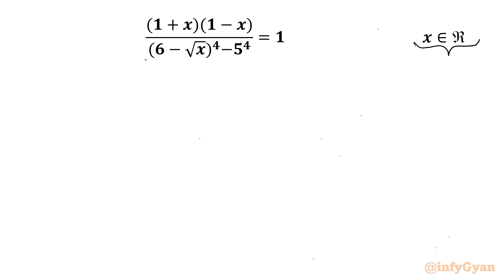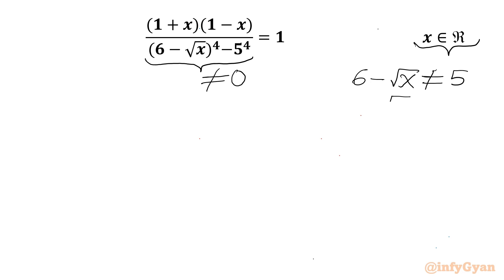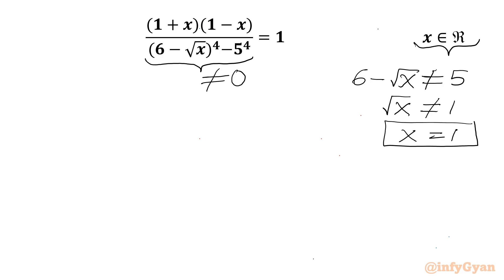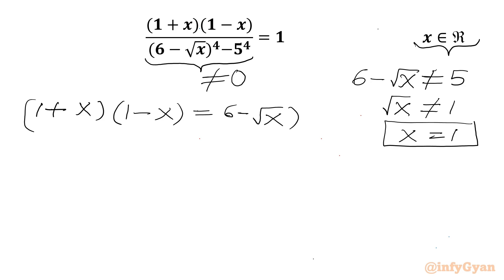Let's get started by noting the denominator cannot be 0. So 6 - √x cannot equal 5, which means √x cannot equal 1, so x cannot equal 1. x = 1 will be a rejected solution. Now I will cross-multiply: (1 + x)(1 - x) = (6 - √x)⁴ - 5⁴.